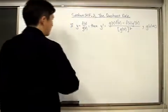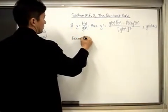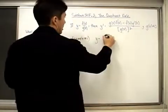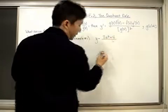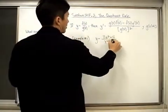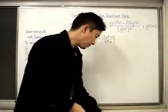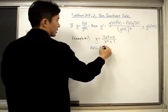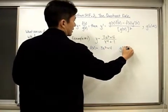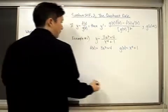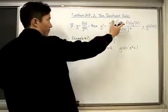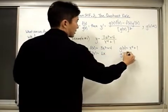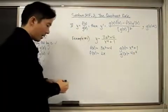Let's take a look at example number one. We have y equal to (3x² + 4) divided by (x⁴ + 1). We need to determine what f(x) and g(x) are. Staying consistent, f(x) is going to be 3x² + 4, and g(x) is going to be x⁴ + 1. So f'(x) is equal to 6x, and g'(x) is equal to 4x³.